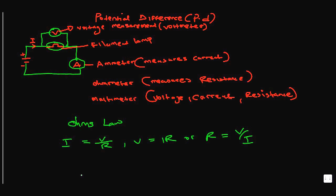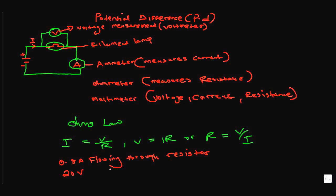Let's do a simple calculation involving Ohm's Law. A current of 0.8 amps flows through a resistor, and an applied voltage of 20 volts is present, causing that current of 0.8 amps to flow. The question is: find the circuit resistance.